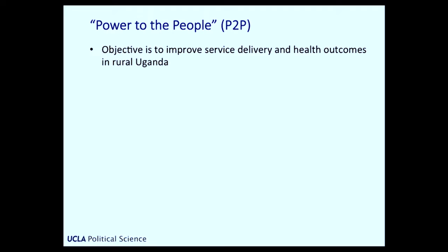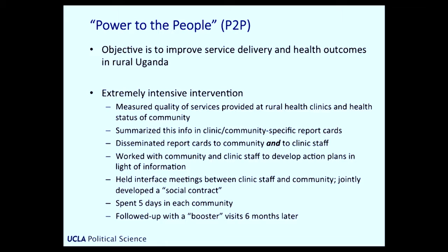I'm not going to be presenting any results of our study, but I'm going to focus on the ways in which we designed it — as a model for how we can move our experimental work more in the direction of addressing questions of under what conditions does something work and why. So let me tell you about the P2P study. The objective of the intervention was to try to improve service delivery and health outcomes in rural Uganda. It was an extremely intensive intervention. It involved first measuring the quality of health care provision being provided at rural clinics in Uganda, and the health status of community members.